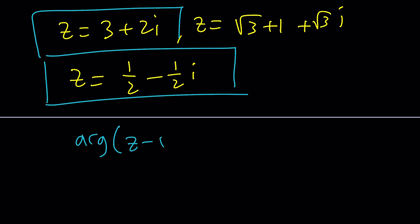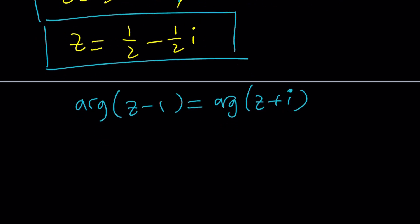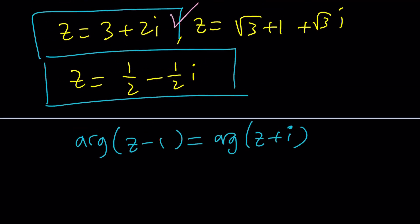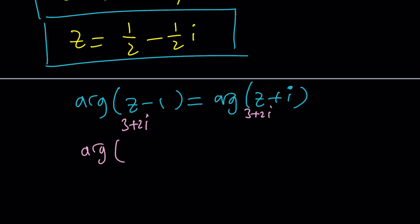So our equation was argument of Z minus one equals argument of Z plus I. Of course, you don't have to always check your answer, but I want to make a point here. So if you plug in the first one, you're going to get three plus two I and three plus two I. So the first one is going to give you the argument of two plus two I. And the second one is going to give you the argument of three plus three I. And as you know, they're equal because they're both equal to pi over four. They're in the first quadrant. We're all good, right?